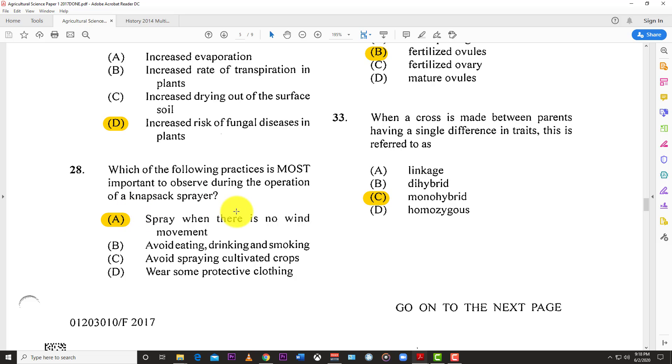Number twenty-eight: Which practice is most important to observe during operation of a knapsack sprayer? I chose A, spray when there is no wind movement, because if you spray during windy conditions, the wind would cause drift. The chemicals might drift on good plants, into the water supply, or kill bees. At the end of the day, this is the most important thing to observe: do not spray when the wind is high.